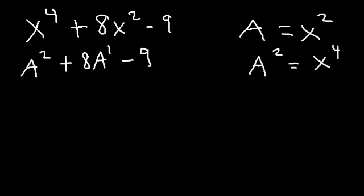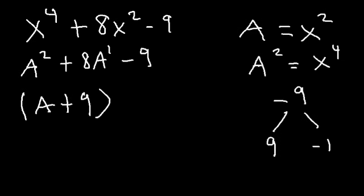So we can rewrite this as a squared plus 8 times a minus 9. Now it's in quadratic form. What two numbers multiply to negative 9 but add to 8? That's going to be positive 9 and negative 1. 9 times negative 1 is negative 9, and 9 plus negative 1 is positive 8.